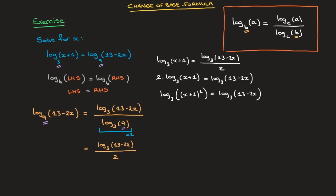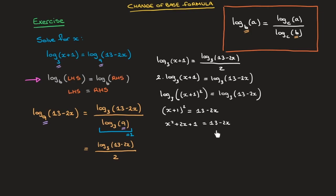At this stage we've reached the scenario illustrated at the beginning. Everything on the left-hand side is written inside a log base 3, and everything on the right-hand side is written inside a log base 3 as well. So we can get rid of the logs altogether and state that (x plus 1) squared equals 13 minus 2x. That leads to x squared plus 2x plus 1 equals 13 minus 2x, and gathering all terms on the left-hand side we find x squared plus 4x minus 12 equals 0.